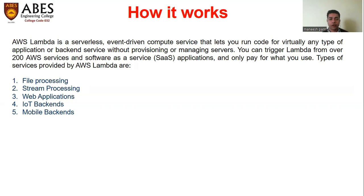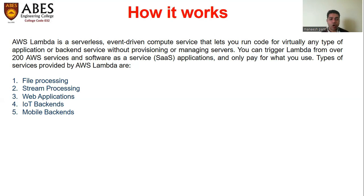You just need to code whatever application you are building, or just provide the data to AWS Lambda, and Lambda is going to do all the processing. You can also attach APIs with Lambda and it can process that data. Reading the full definition: AWS Lambda is a serverless, event-driven compute service that lets you run code for virtually any type of application or back-end service without provisioning or managing servers. You can trigger Lambda from over 200 AWS services and software-as-a-service applications, and only pay for what you use.